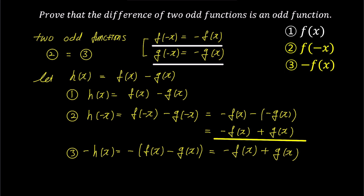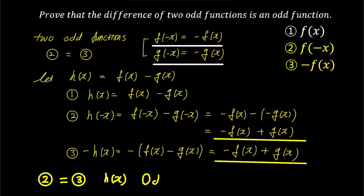Comparing steps 1, 2, and 3, we can observe that step 2 and step 3 are the same. Therefore, the difference of two odd functions h(x) becomes an odd function.